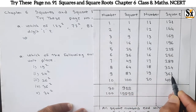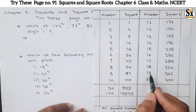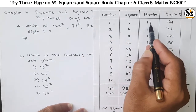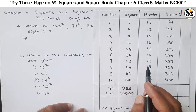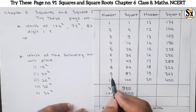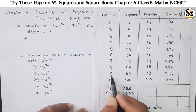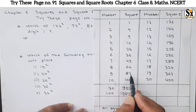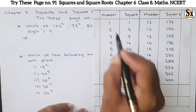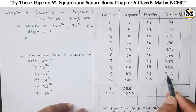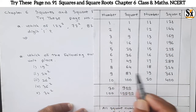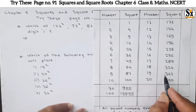For number 1, the unit place of its square is 1. For 9 also, and for 11 also — 121 — and for 19 — 361 — unit place is 1. This concludes: if the unit place of a number is either 1 or 9, then the unit place of its square will always be 1. For example: 9²=81, 1²=1, 11²=121, 19²=361.